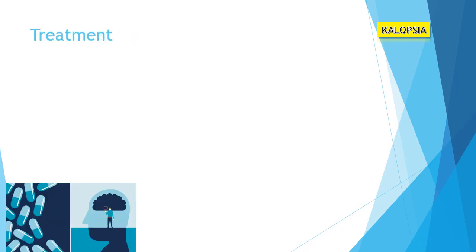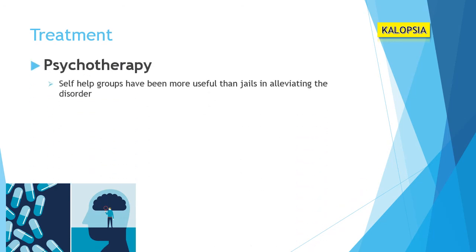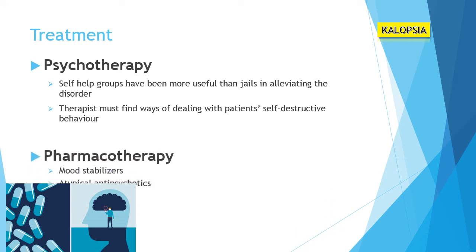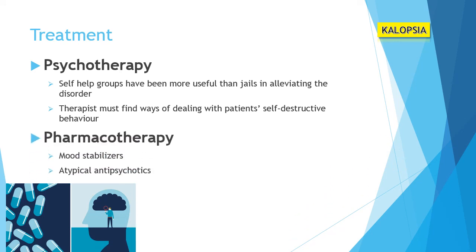Regarding treatment for antisocial personality disorder, we can consider psychotherapy and pharmacotherapy. In psychotherapy, self-help groups have been more useful than jails in alleviating this disorder, and the therapist must find ways of dealing with the patient's self-destructive behavior. With pharmacotherapy, mood stabilizers and atypical antipsychotics can be used.